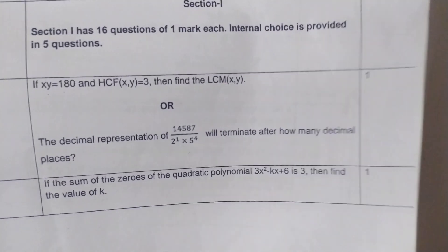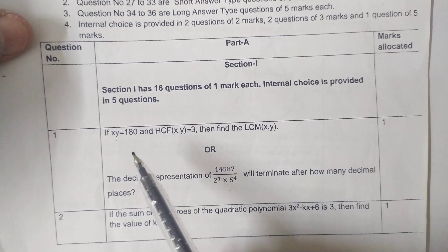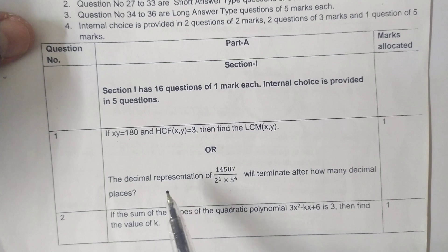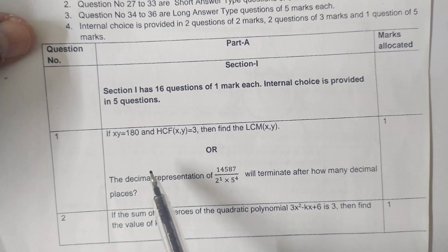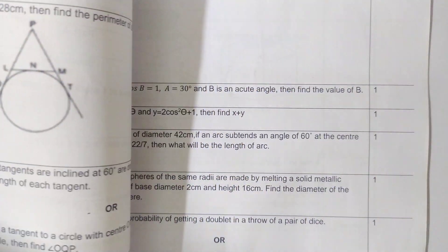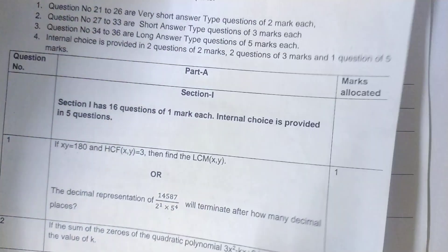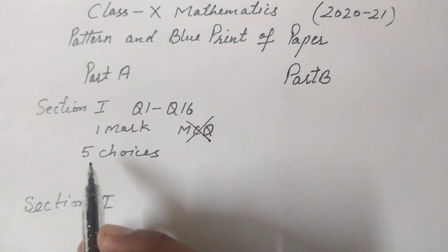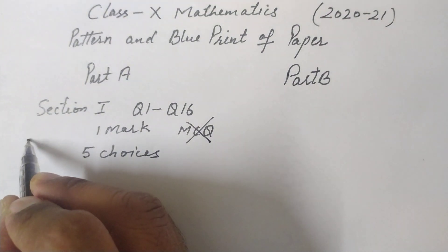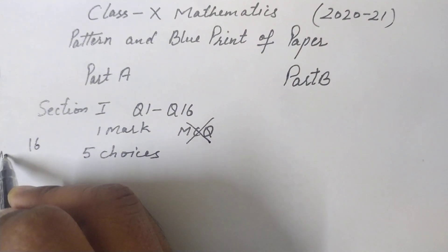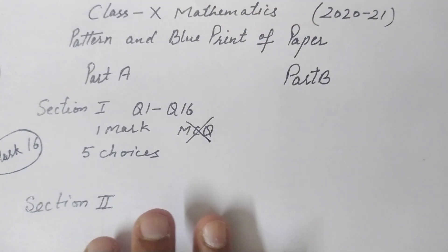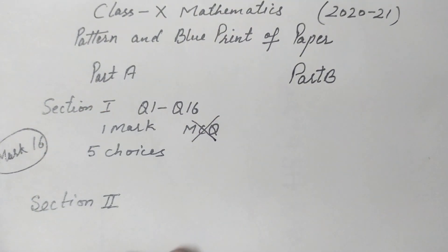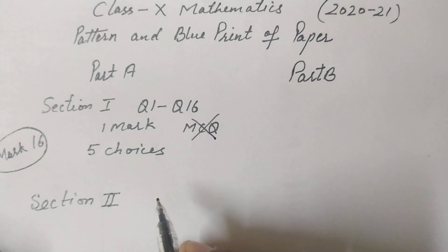Five internal choices will be given in these 16 questions, meaning on five questions you will be given two options and you solve any one. So Section 1 has 16 questions of one mark each, totalling 16 marks.